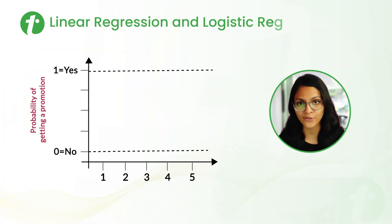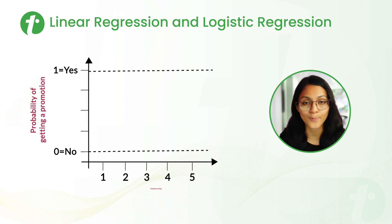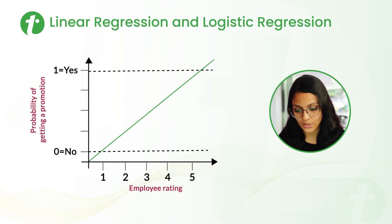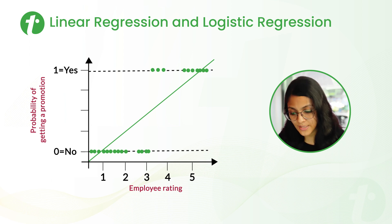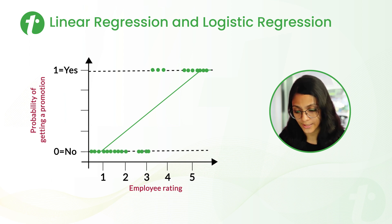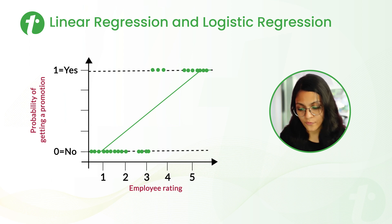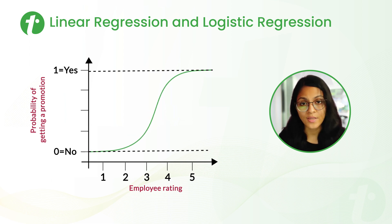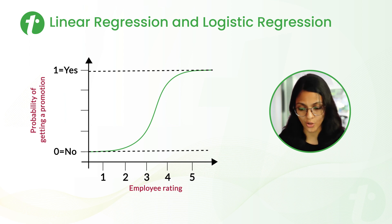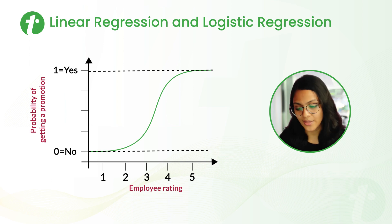Let's try to use Linear Regression for the case of whether the employee will get the promotion or not. We can observe that using Linear Regression here is totally irrelevant, as we have data points for employees getting the promotion and others not getting it, and the straight line is not helpful. We would have to clip the line, resulting in three separate lines and three equations, which is not efficient. So we convert these three lines into a curve — the Sigmoid Curve — which represents Logistic Regression. Using the sigmoid curve, we can easily predict: if the data points have a value greater than the threshold, the employee will get the promotion; if less, they will not.